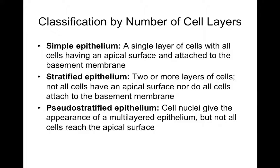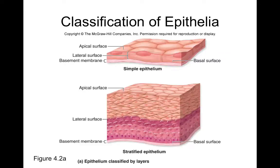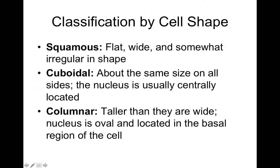When we say pseudo we mean fake — pseudostratified epithelium looks stratified but is actually just one cell layer. We can also classify epithelial tissues based on cell shape: squamous means flattened, cuboidal means cube-shaped, and columnar means column-shaped.